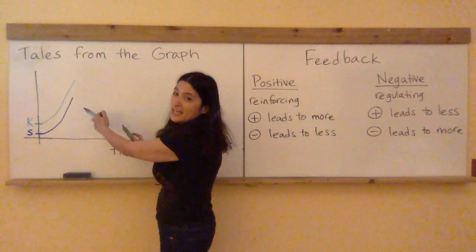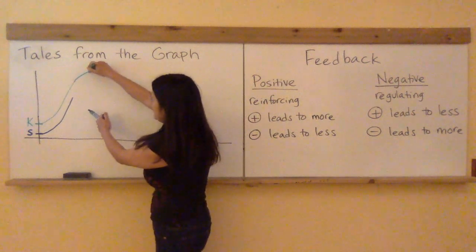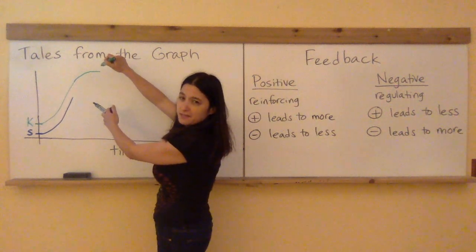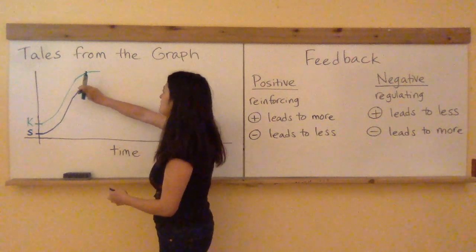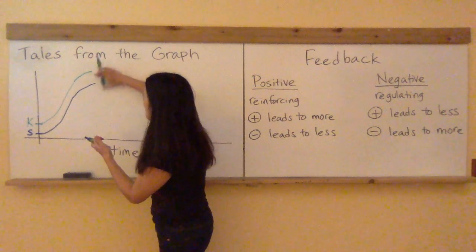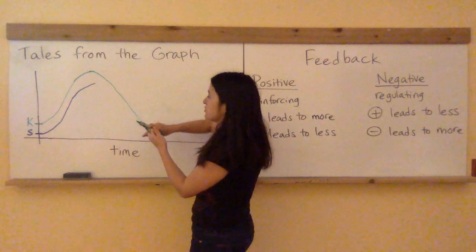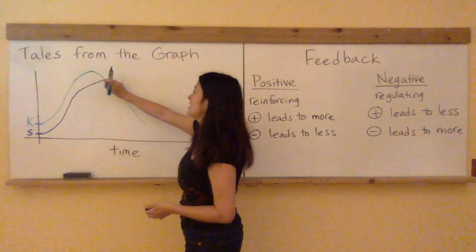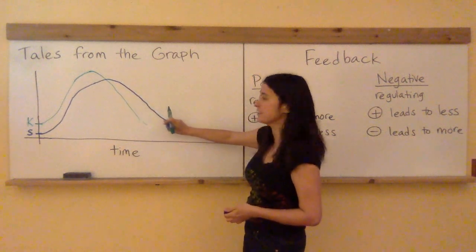As you get more and more snails you know what's going to happen. They're going to start eating the kales. And so the kale population although it was growing exponentially will inevitably have to top off somewhere as the snail population catches up to it and starts eating it all. Then once the snail population is high enough it's going to lower the kale population back down. And with so many snails around that smaller amount of kale is not going to satisfy them and then they're going to go down.